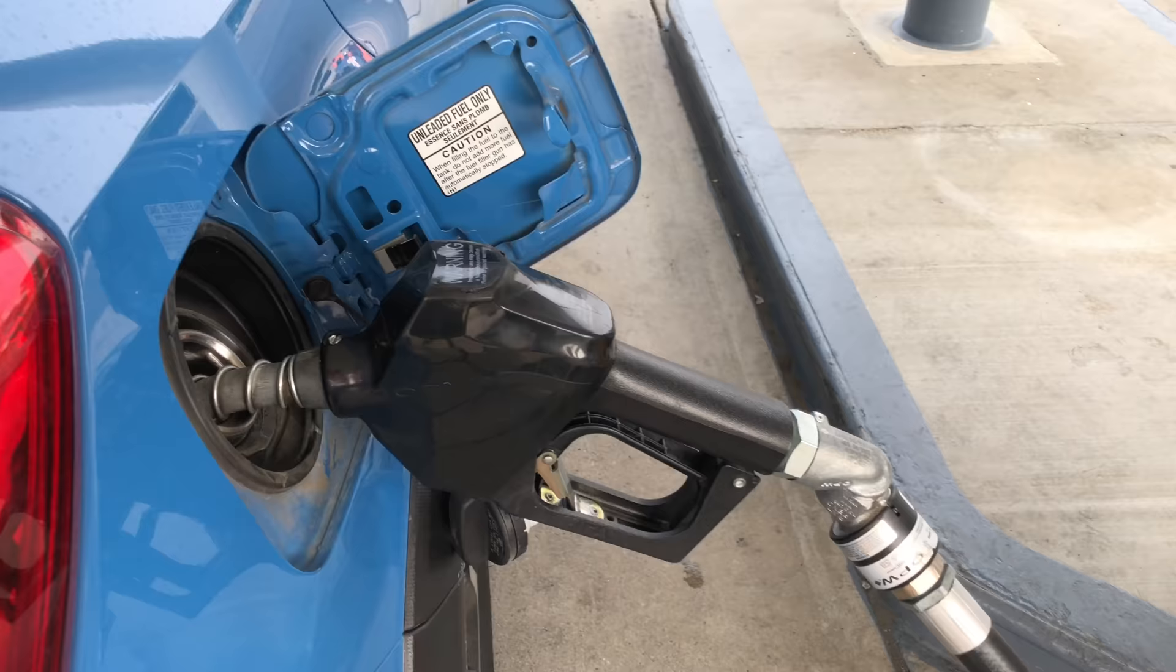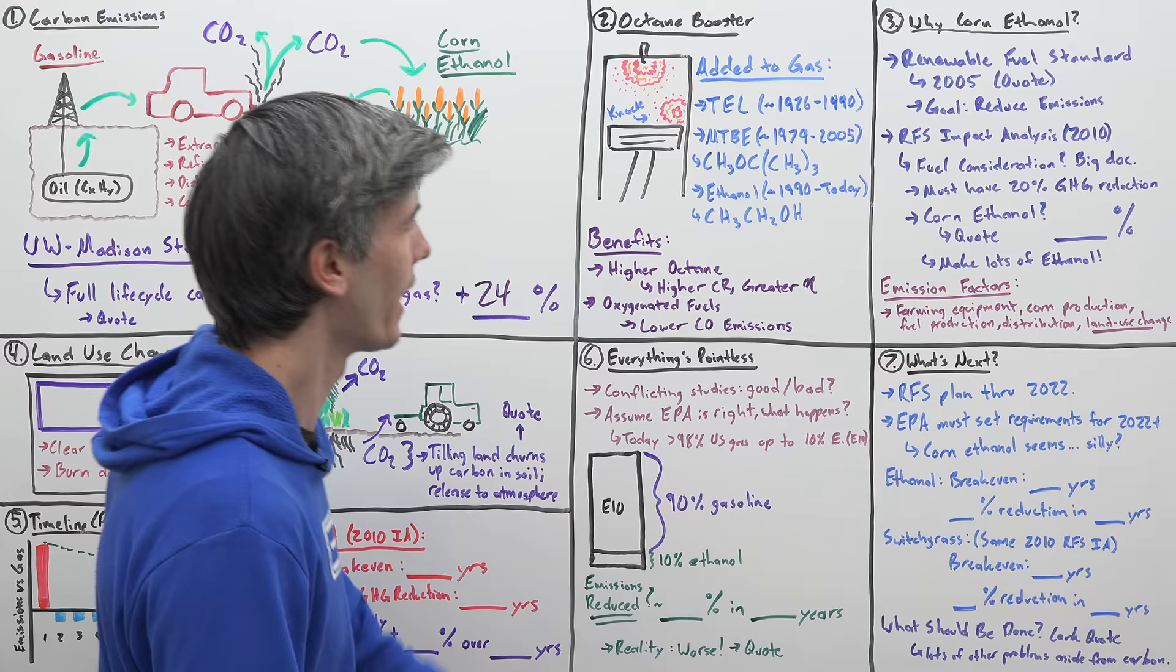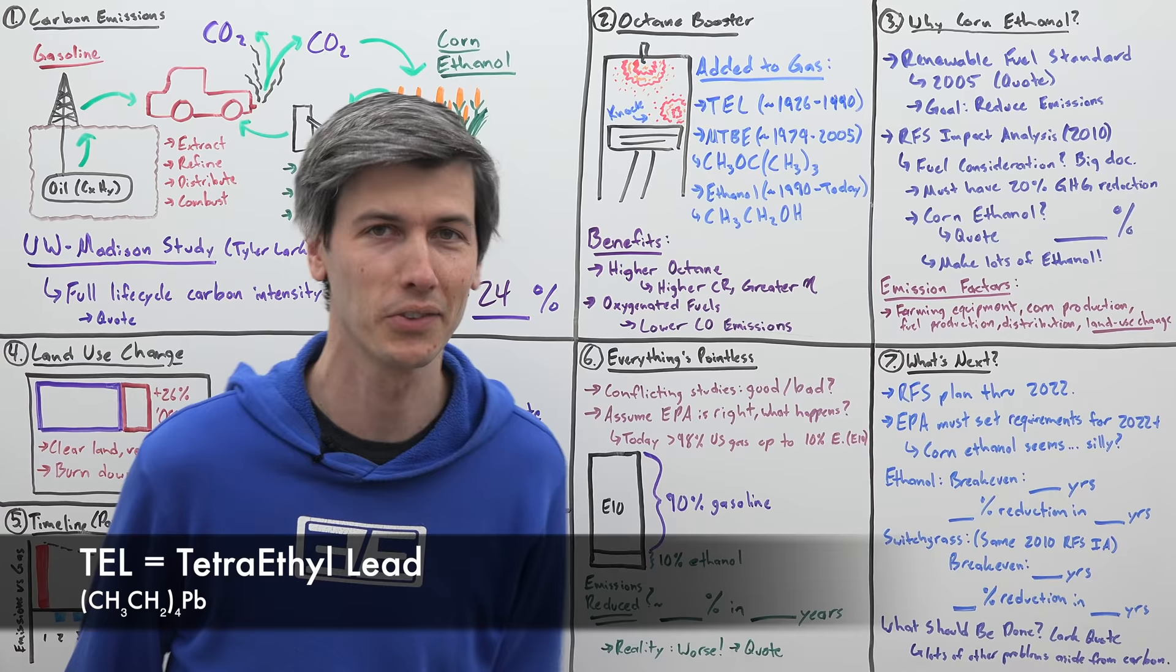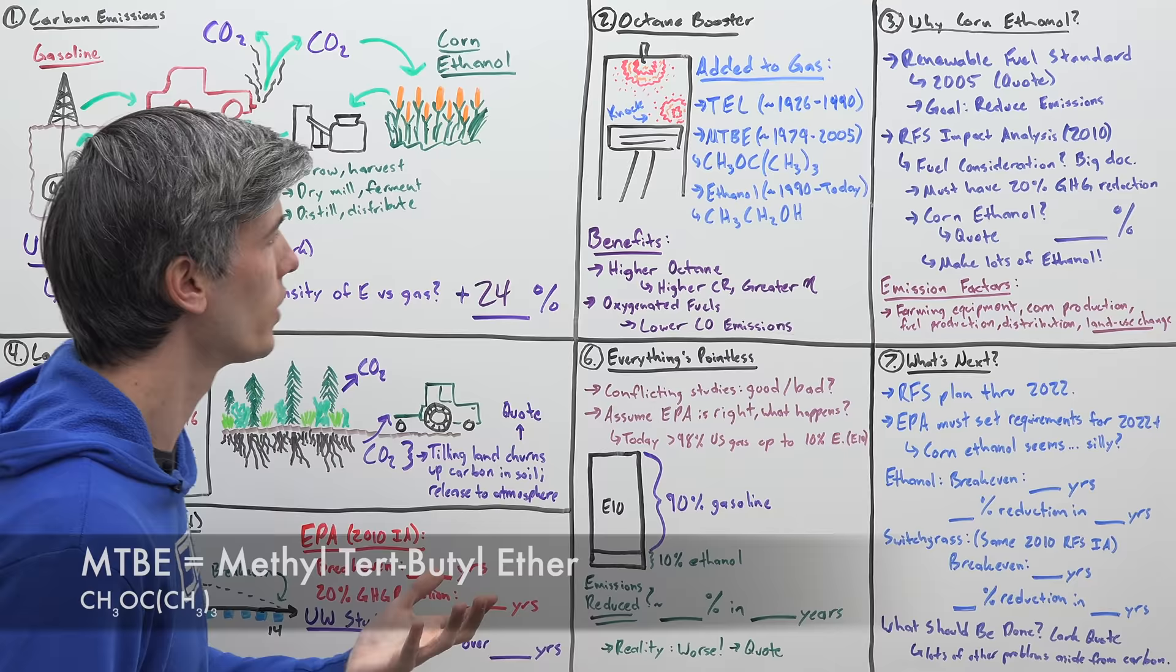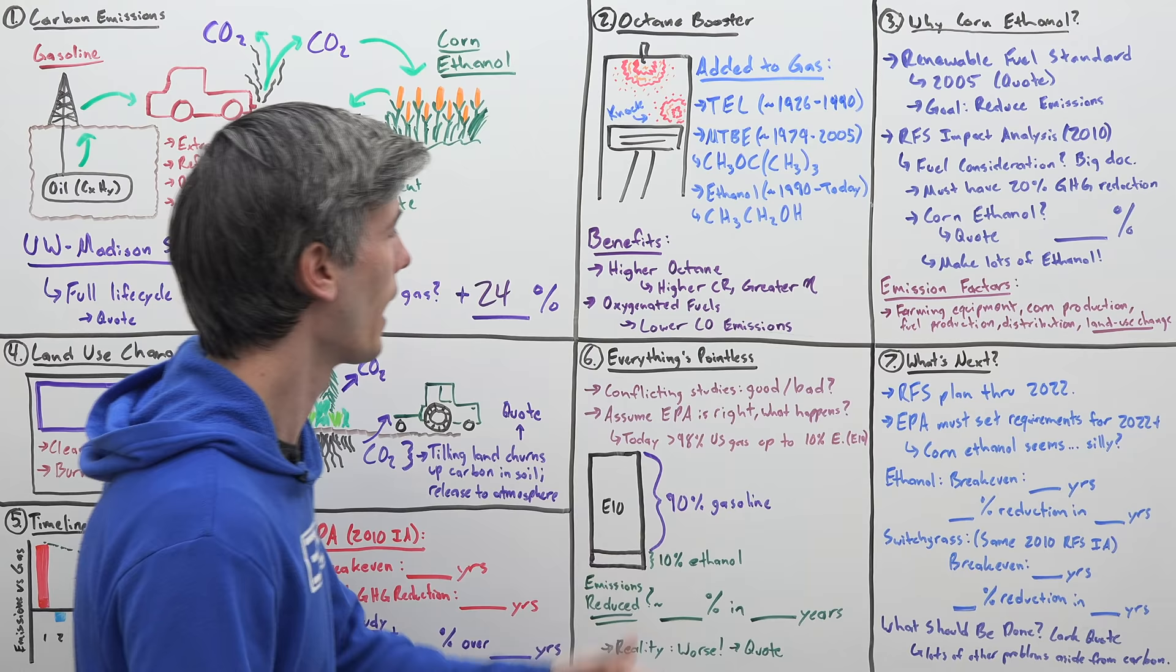Now, ethanol does serve another purpose aside from being a renewable fuel when added to gasoline and that it acts as an octane booster. And it is better than the alternatives that we have previously used as an octane booster. So we used to use lead from about 1926 till the 1990s. We knew that lead was bad back in 1926, but we continued to use it for quite some time in cars. Then we switched to MTBE. We stopped using that around 2005.